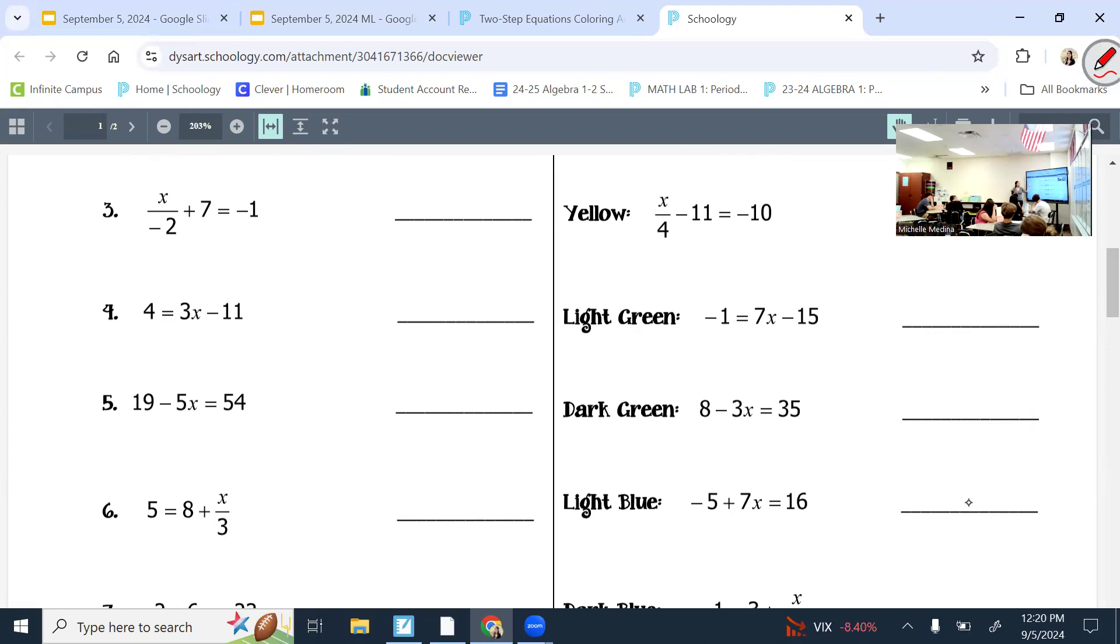Undo what's being done to it, and you always start with what is farther from the variable. So, in this one, number three, what's farther from the x? The 7 and the negative 2. What's opposite of adding 7? Subtracting 7. So, that's what I'm going to try. But it's a rule that whatever you do on one side of the equal sign, you do it to the other side.